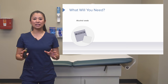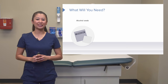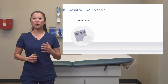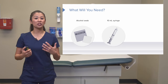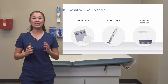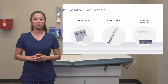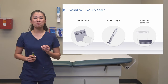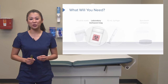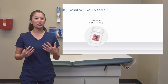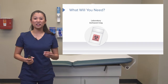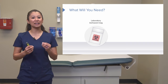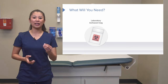Now let's take a look at our equipment on how we're going to get that urinary specimen. We need an alcohol swab to clean that port, a syringe to pull back our collection, and a sterile specimen container. Make sure you get a biohazard bag to put this in once you collect a specimen, as there could be contamination on the outside of that container. You want to make sure this is sealed, contained, and labeled appropriately.